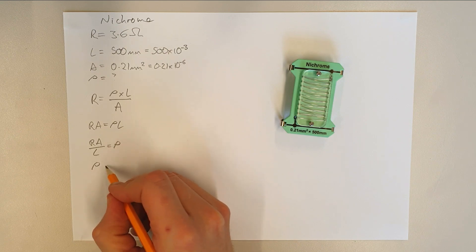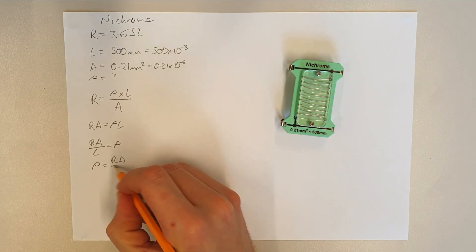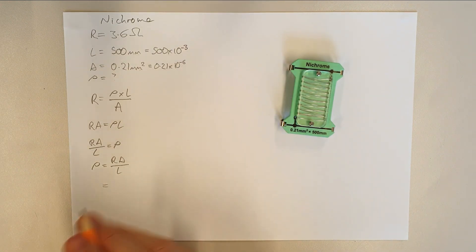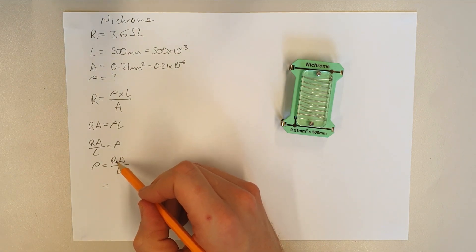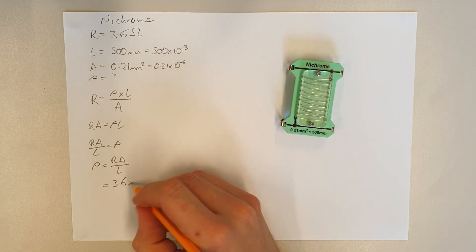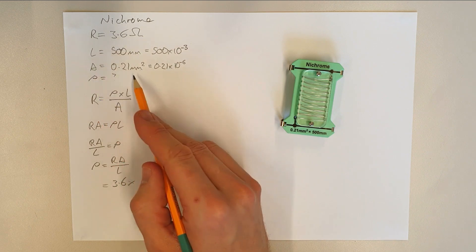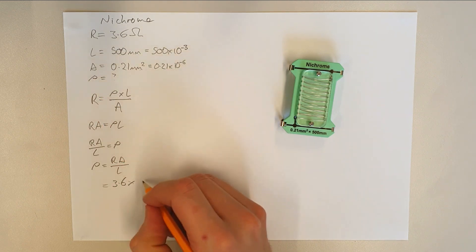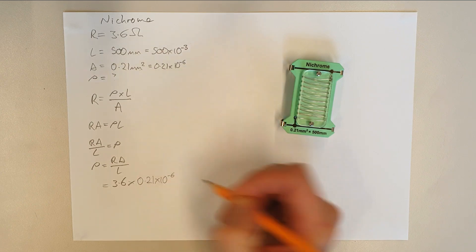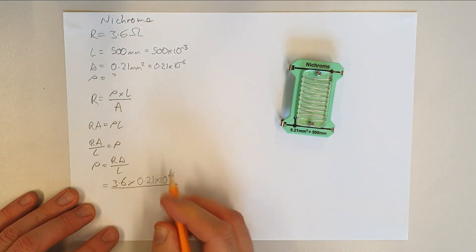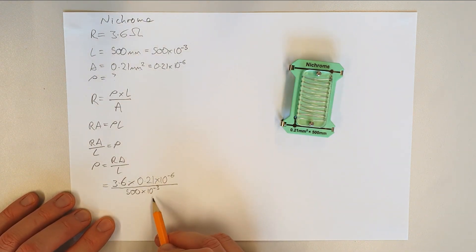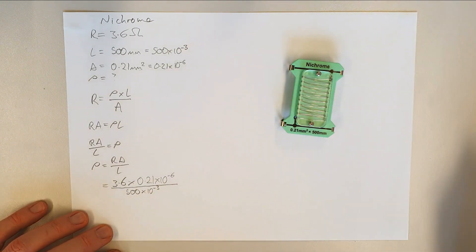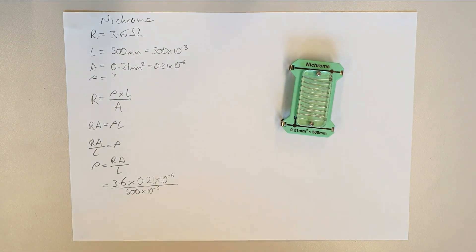We normally like to have the subject on the left, so: ρ = RA/L. Now we substitute the numbers: R is 3.6 ohms, A is 0.21 × 10⁻⁶ m², and L is 500 × 10⁻³ m. You could write 500 × 10⁻³ as 0.5, but using powers of 10 is better practice and will help you in the electrical industry or engineering.